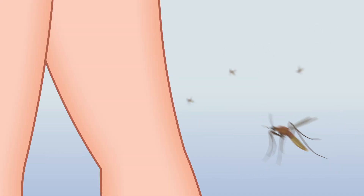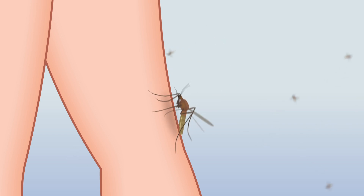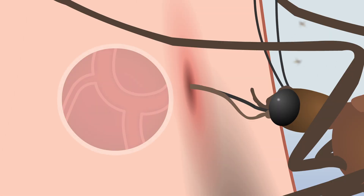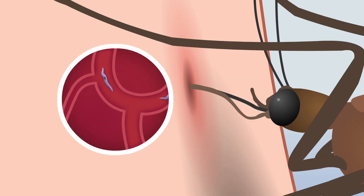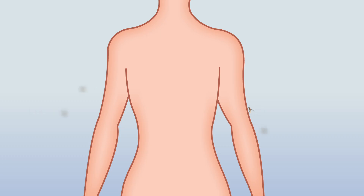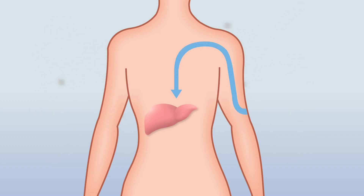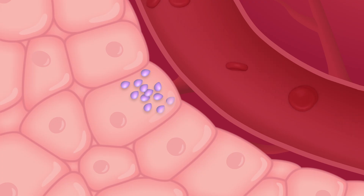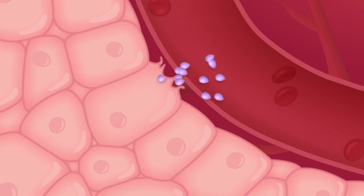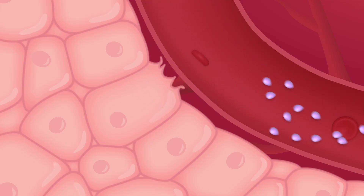When an infected mosquito bites a human, the parasites travel with the mosquito's saliva into the human bloodstream. The parasites travel to the liver, where they mature into a form capable of infecting red blood cells. The mature parasites burst out of liver cells into the bloodstream, where they quickly invade red blood cells.